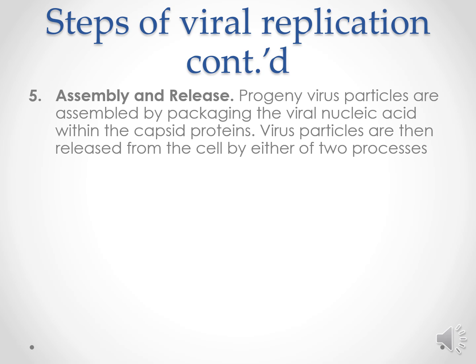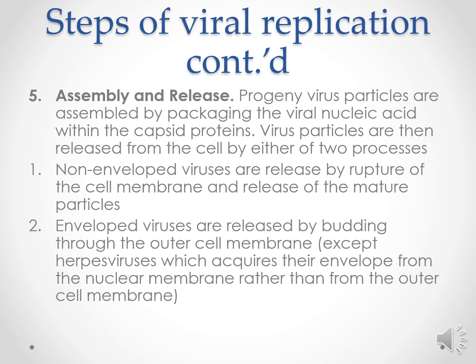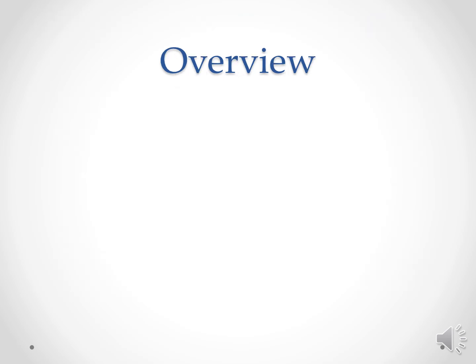The next step is assembly and release. The progeny virus particles are assembled and packed with viral nucleic acid within the capsid proteins. Virus particles are then released by one of two processes: non-enveloped viruses are released by rupture of the cell membrane releasing matured particles, while enveloped viruses may release by budding of the outer cell membrane, except herpesviruses which acquire their envelope from the nuclear membrane rather than the outer cell membrane.